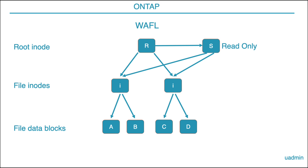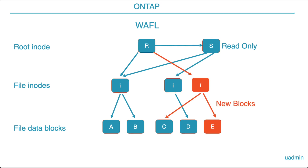Every snapshot that is created is part of the volume file system structure, so the snapshot and the active file system share the same blocks. The snapshot is a read-only copy of the root inode, so you will never be able to go in and change anything inside the snapshot. In the active file system, however, you could change D into E, but that would simply create a new block. The only difference is that the snapshotted block cannot be freed, because it's part of a snapshot — and at this point the snapshot starts taking file system space.